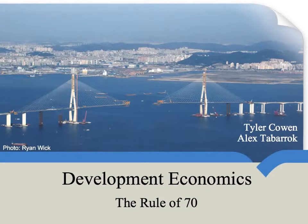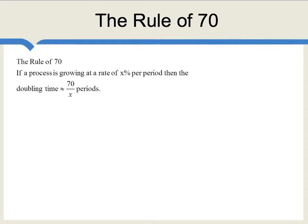Welcome, everyone. This is Alex Tabarrok. Today we're going to be taking a look at the Rule of 70. The Rule of 70 is a simple rule of thumb which says that if a process is growing at a rate of X percent per period, then the doubling time is approximately 70 divided by X periods.